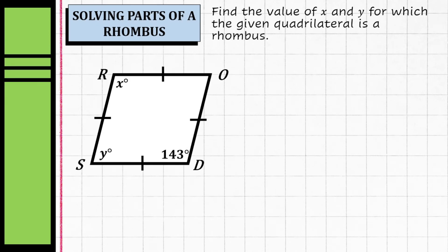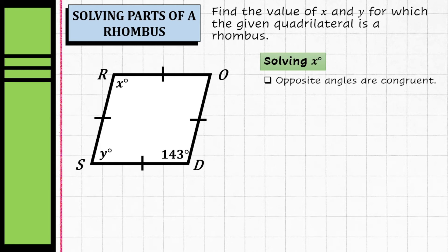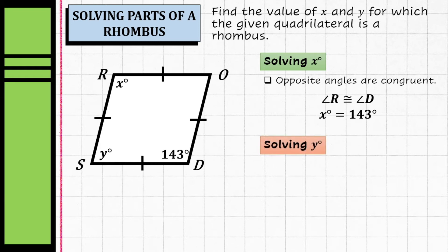Let's have another example. Given this rhombus, we're going to solve for the value of x and y. First, let's solve for x using the property that opposite angles are congruent. Since we're given the opposite angle of angle R, we can say angle R is congruent to angle D, so x equals 143 degrees.